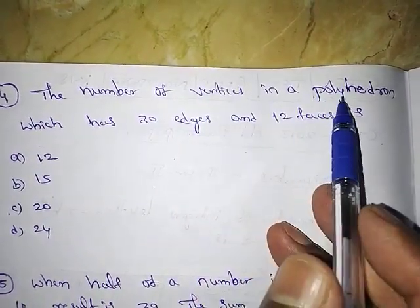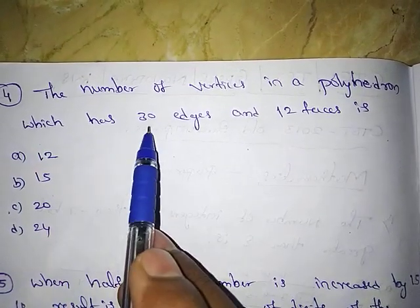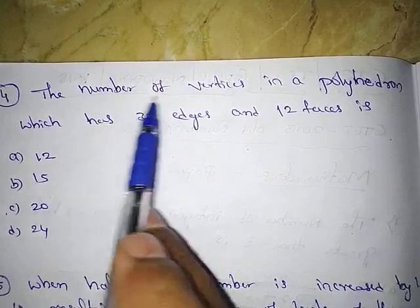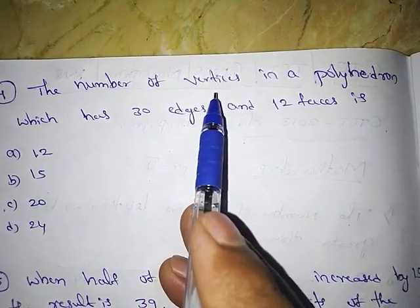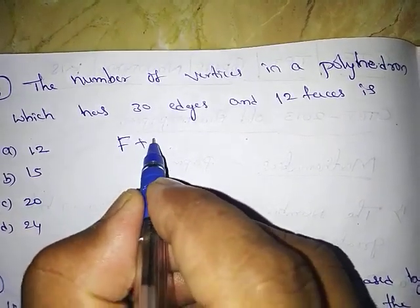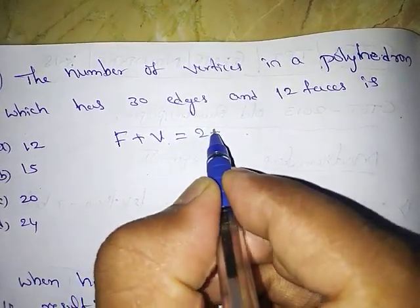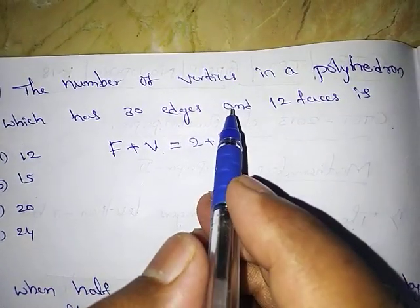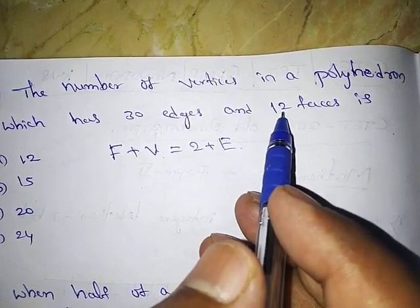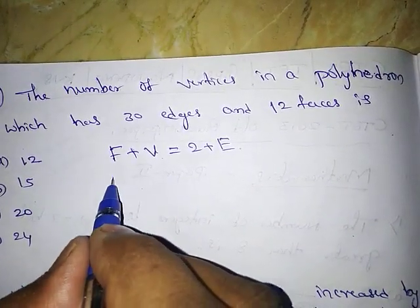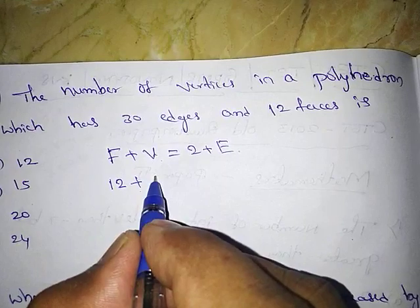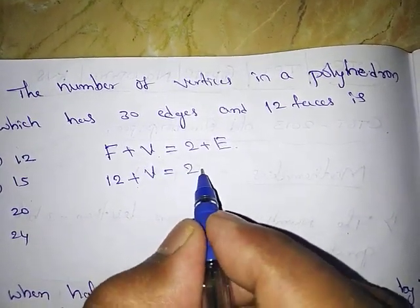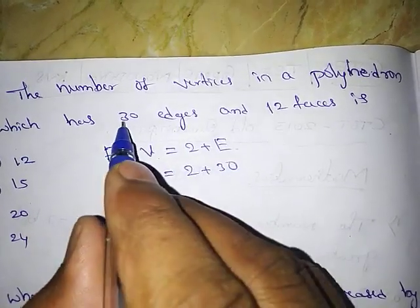Next: the number of vertices in a polyhedron which has 30 edges and 12 faces. We need to find the number of vertices. Use Euler's formula: Faces + Vertices = 2 + Edges. Faces are given as 12, edges are given as 30.